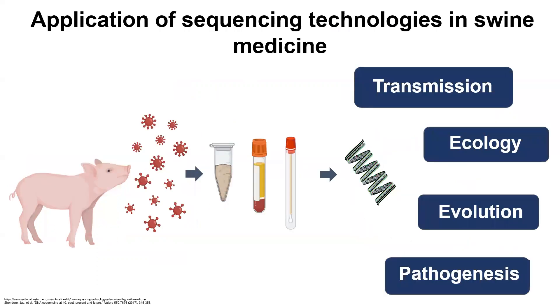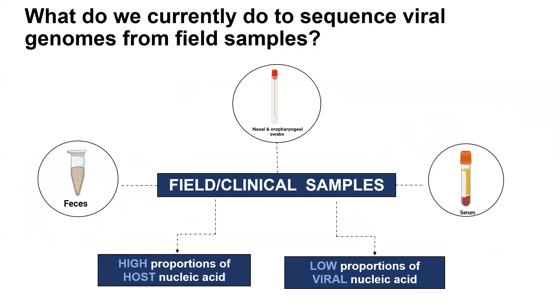Sequencing of viral genomes using field samples, such as feces, serum, and nasal and oropharyngeal swabs, can help better understand virus ecology, evolution, transmission, and pathogenesis within the swine populations.